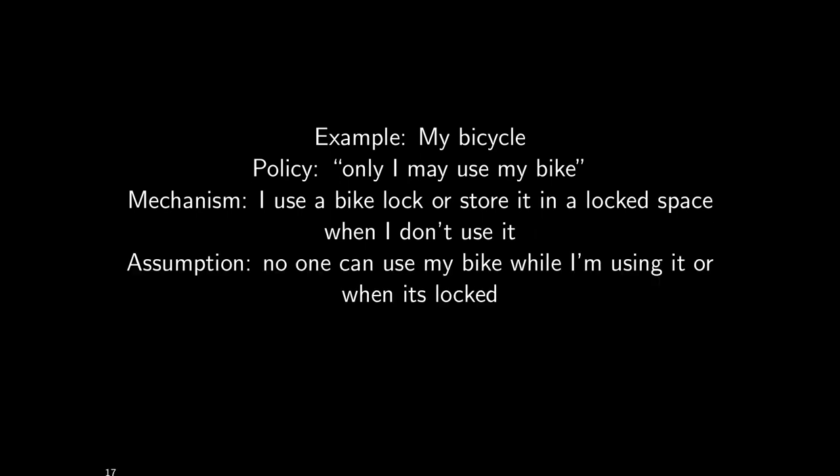Another example: my bicycle. A policy might be that only I may use my bike. The mechanism is using a bike lock when I'm not using it, or storing it in a locked space. But this mechanism assumes no one can use my bike while I'm using it, that someone can't jam the wheels, or that no one can pick the lock. While the mechanism seems good for the policy, it makes assumptions — and when those assumptions are false, we have a security attack.